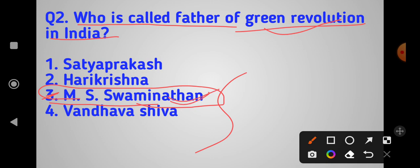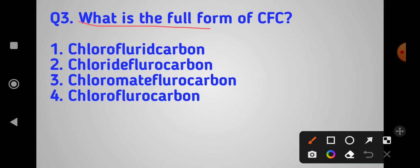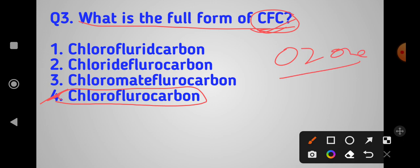What is the full form of CFC? The answer is chlorofluorocarbon. Option number four is correct - chlorofluorocarbon. This is important because chlorofluorocarbon causes depletion of the ozone layer. It's found in refrigerators and freeze gases.